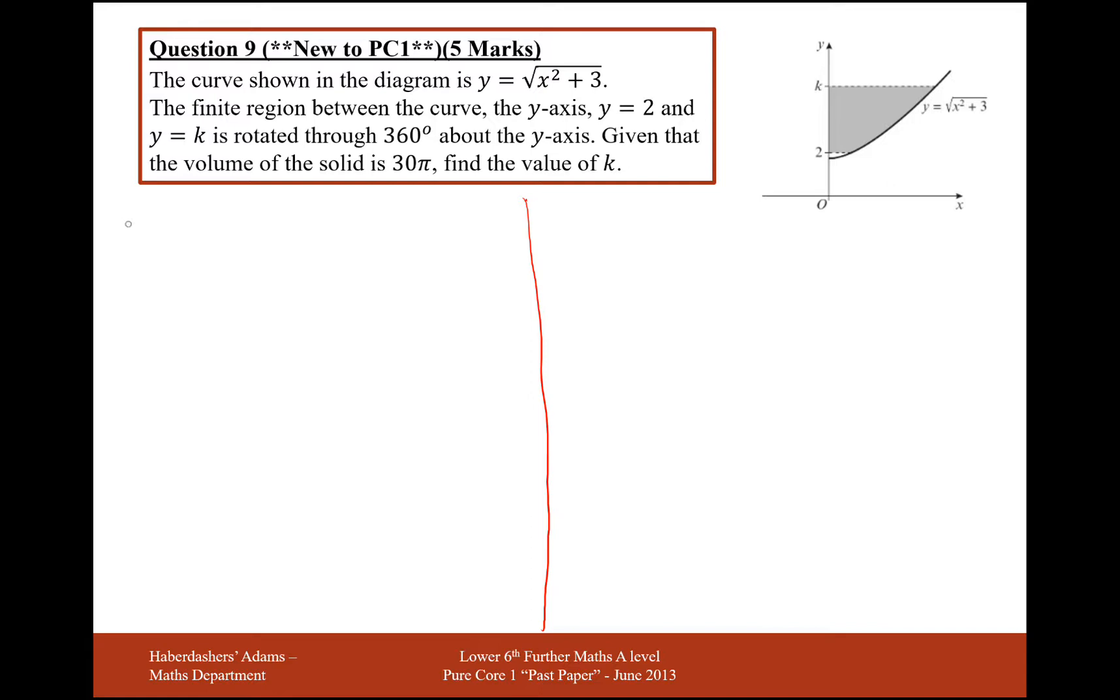So the formula for this, as seen as we're revolving around the y-axis, is pi times the integral between our two bounds of x squared dy. So we've swapped over how they usually are. It's usually y squared and a dx, but as seen as we're revolving around the y-axis, we have to do it this way.